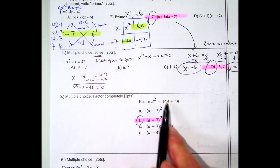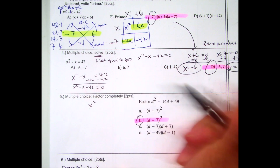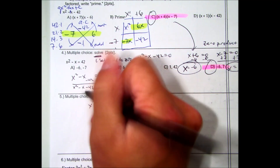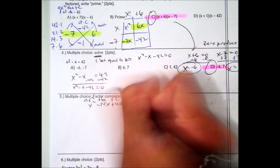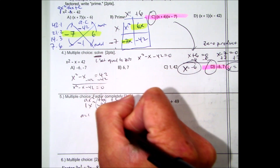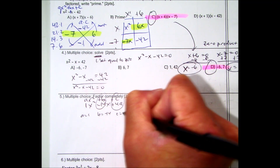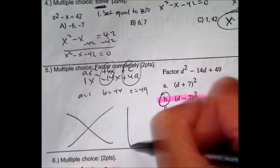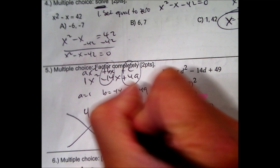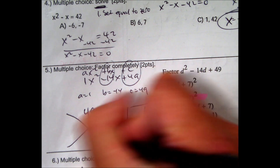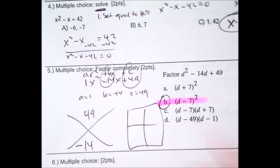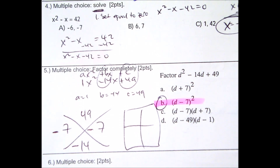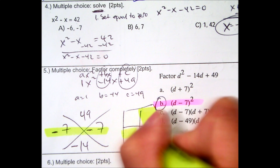Question number 5: factor d² − 14d + 49. If you don't like those variables, you can change it to x² − 14x + 49. Standard form: a is 1, b is negative 14, c is 49. Put it into the x box. A times C is 49, B value is negative 14. Two numbers that multiply to be 49 are 7 and 7, and they add to be negative 14, so they'll both be negative 7s. Color-code it — that's very helpful.